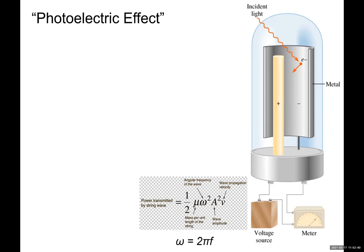So until this experiment was done, this experiment is called photoelectric effect. It was known by that time that certain metals, like alkaline metals, if you shine light to them, they are going to release electrons.